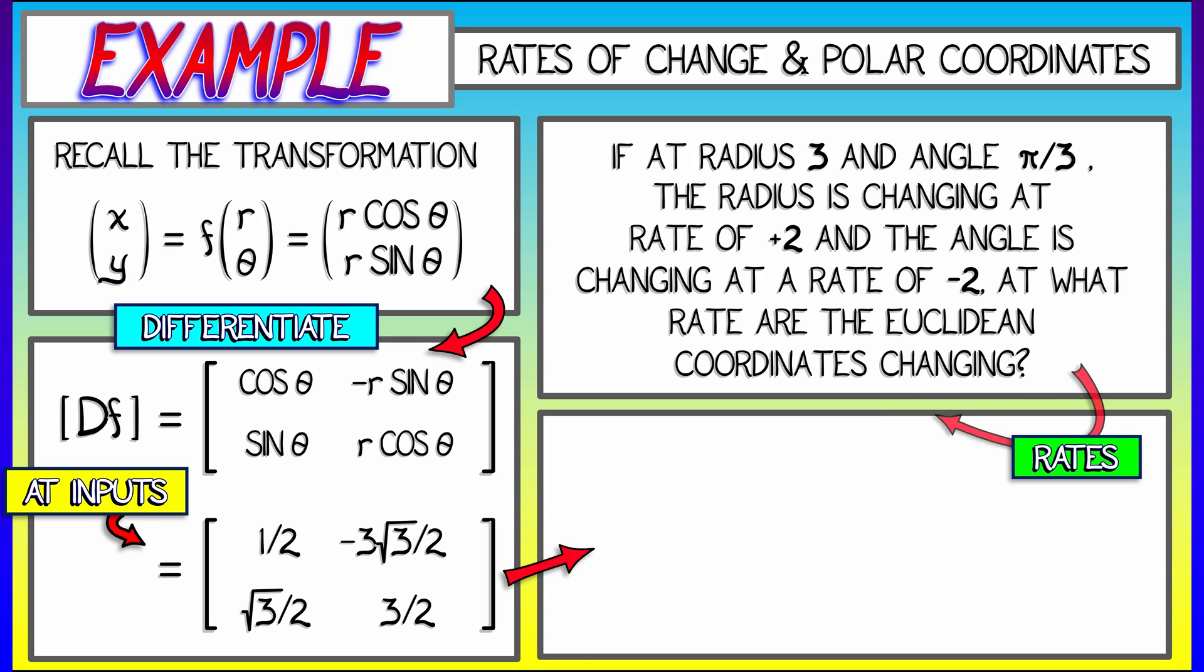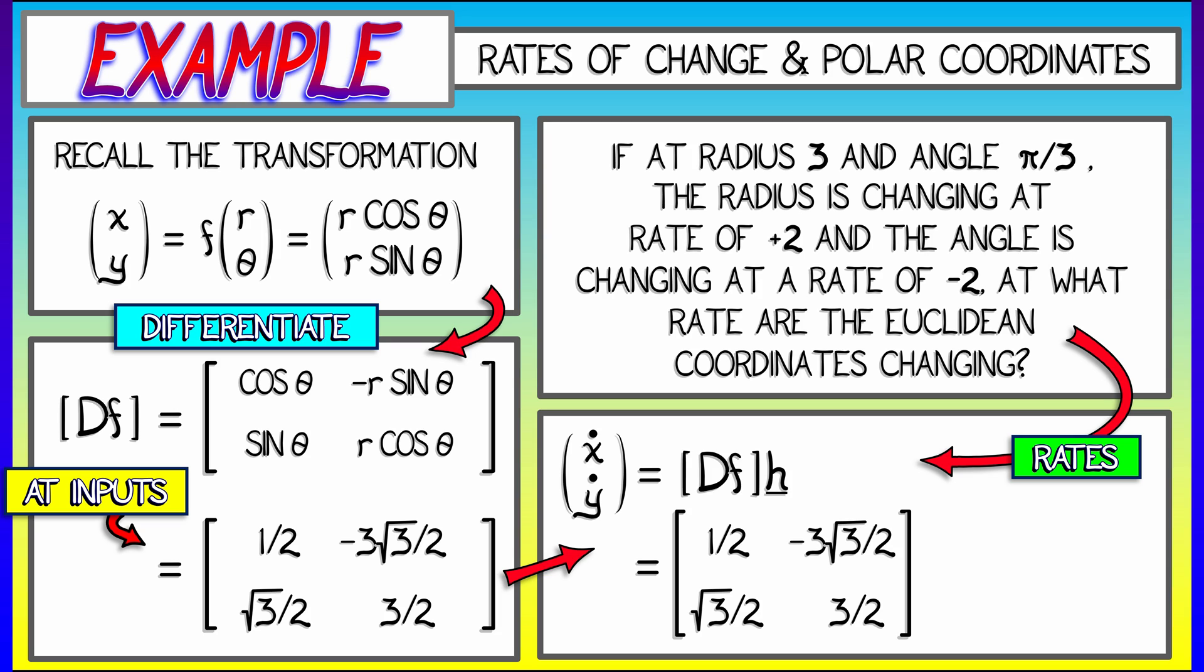Now I'm going to take that matrix, and in order to get the vector x dot y dot, the rates of change of x and y, I'm going to multiply that matrix by the vector of rates of change of inputs, that is r dot and theta dot, 2 and negative 2. A little bit of algebra gives me the rates of change of outputs as 1 plus 3 root 3 and root 3 minus 3.